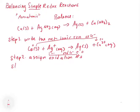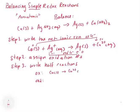Step three is to write the half reactions. We're going to follow our process from the last video. For the oxidation: Cu(s) → Cu²⁺(aq), and for the reduction: Ag⁺(aq) → Ag(s). Now we write in our electrons — the copper half reaction gives up two electrons on the right, and the silver half reaction gains one electron on the left. Those are our half reactions. You can see they're not balanced yet in terms of electrons, and that's okay at this stage.